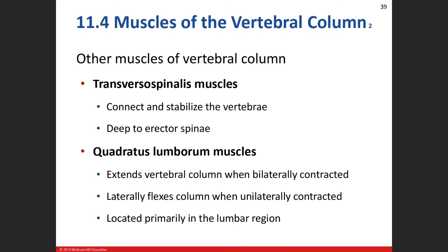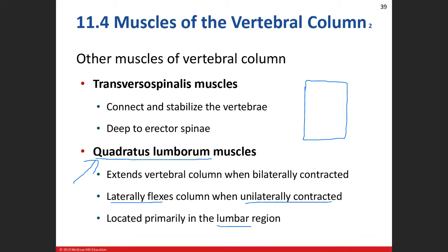Now quadratus lumborum — another muscle I love. We name this muscle after its shape: quadrilateral, because it looks like a rectangle, and after its location in the lumbar spine. You're engaging it right now sitting up. When you bend over, you contract both left and right quadratus lumborum to straighten back up. If you do a side bend to the left, you're contracting the left quadratus lumborum; leaning right contracts the right. That's ipsilateral lateral flexion — unilateral contraction. That's why we call it lumborum.